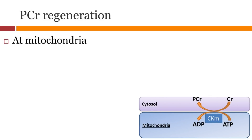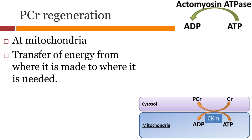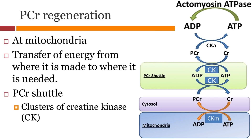However, it needs to be transported to where it is needed — in this case, the actomyosin ATPase in the muscles. This is done through the phosphocreatine shuttle. There are clusters of creatine kinase in the cytoplasm which facilitate this pathway.